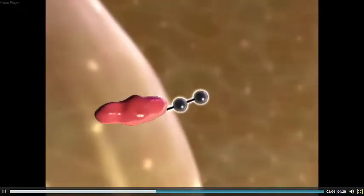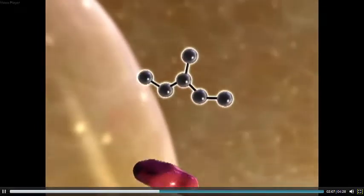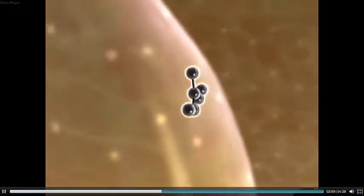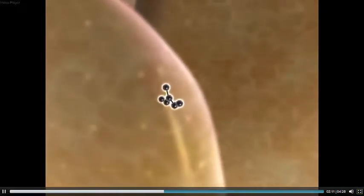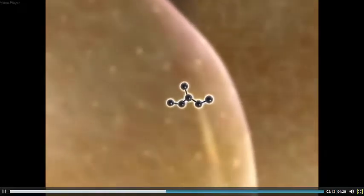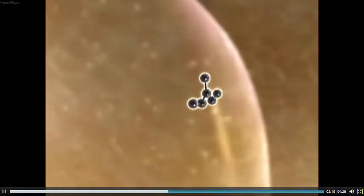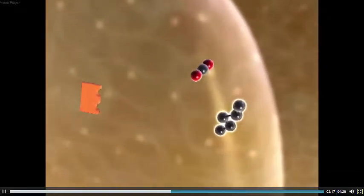Coenzyme A is removed, and the remaining two-carbon skeleton is attached to an existing four-carbon molecule that serves as the starting point for the citric acid cycle. The new six-carbon chain is partially broken down, releasing carbon dioxide.